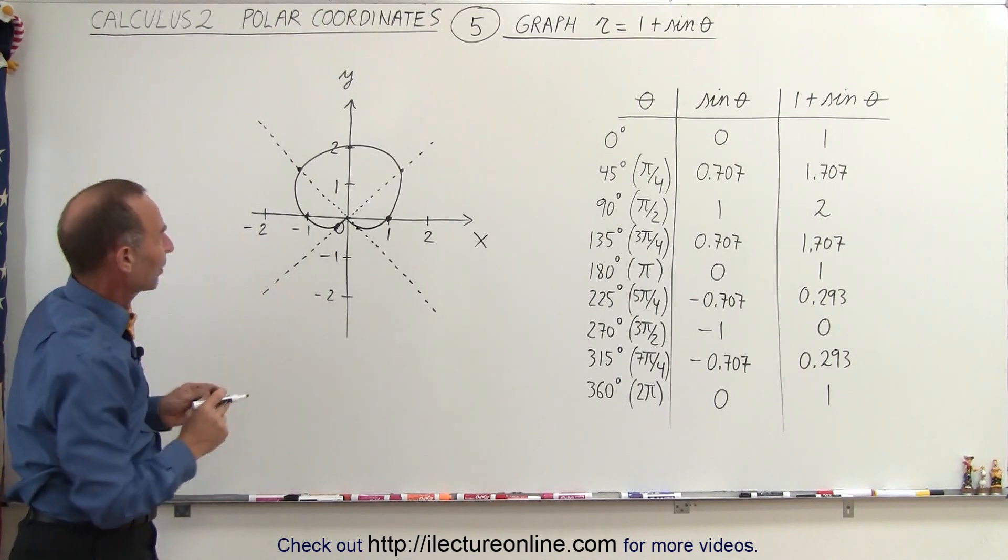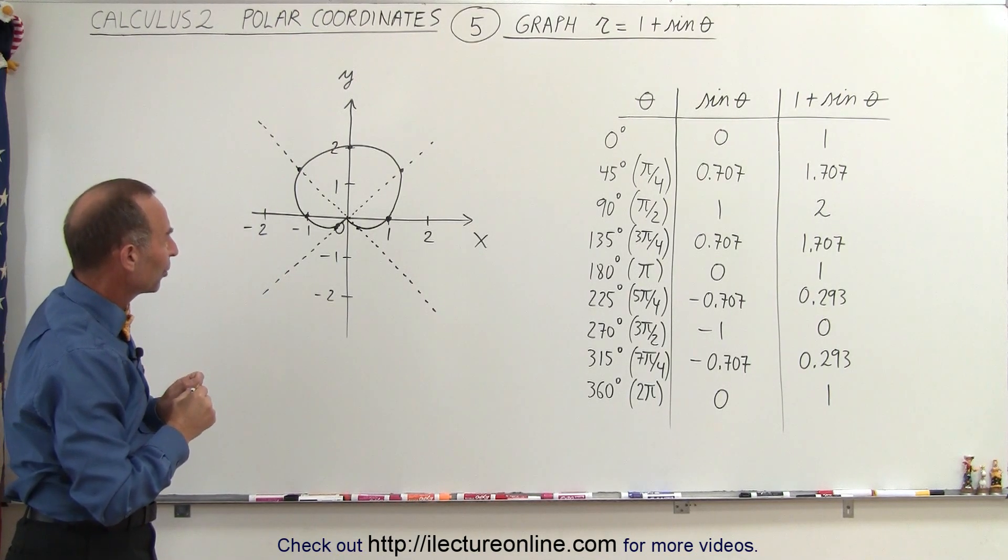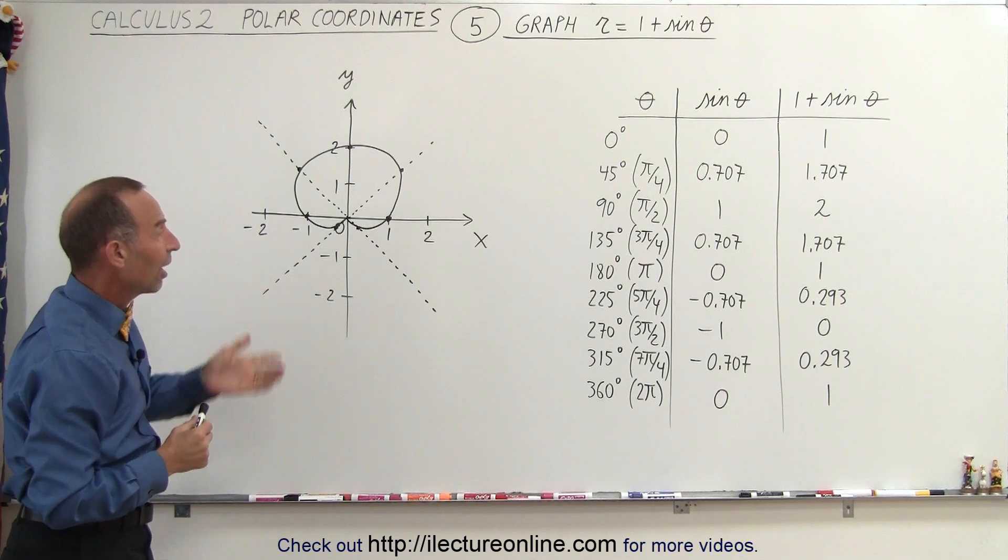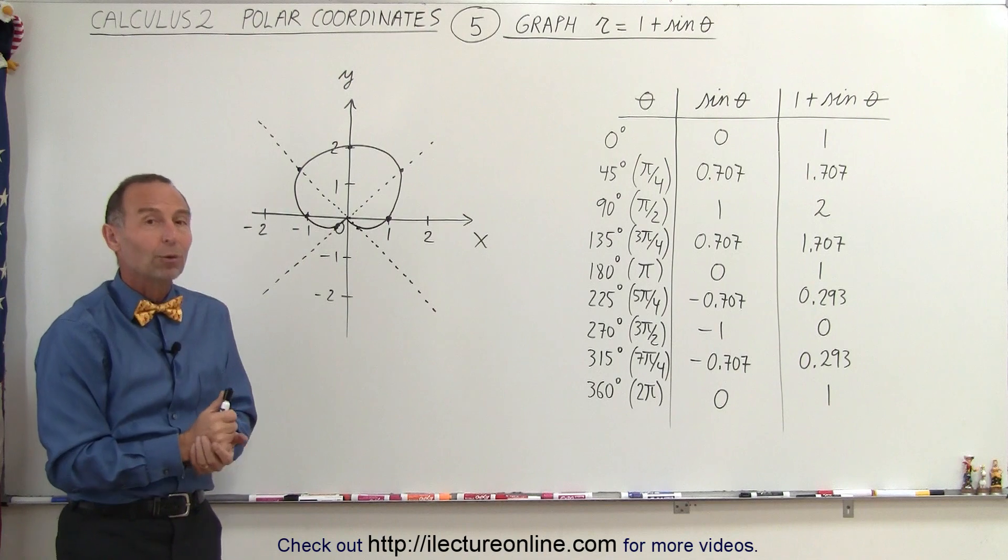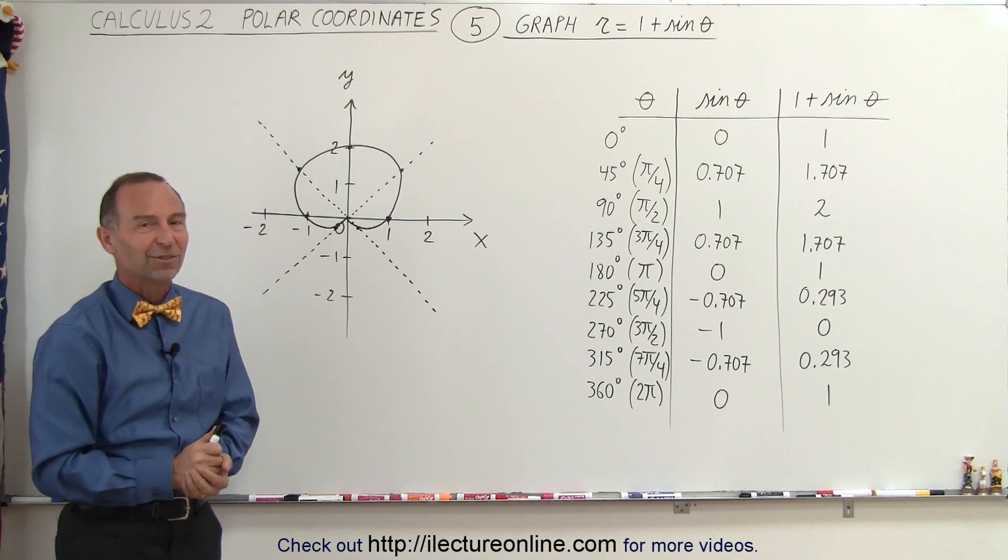Of course, freehand drawing doesn't look quite perfect, but it's close enough to get us a pretty good idea. And that's how we go about finding the graph corresponding to a polar function like that. That's how it's done.